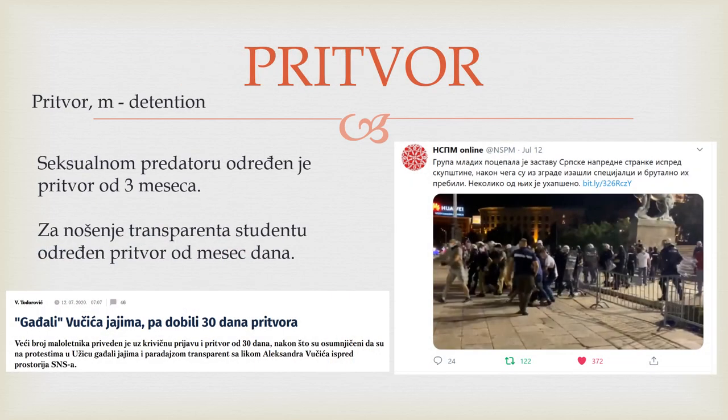In a democracy, you have the rule of law. If you do something that's against the law, you might be facing detention. Detention in Serbian is pritvor. Like, if you're a sexual offender, you might be getting detention. Or if you're carrying a banner on a protest, you might also be facing detention. We would say: Seksualnom predatoru određen je pritvor od tri meseca. Or: Za nošanje transparenta studentu određen pritvor od mesec dana.